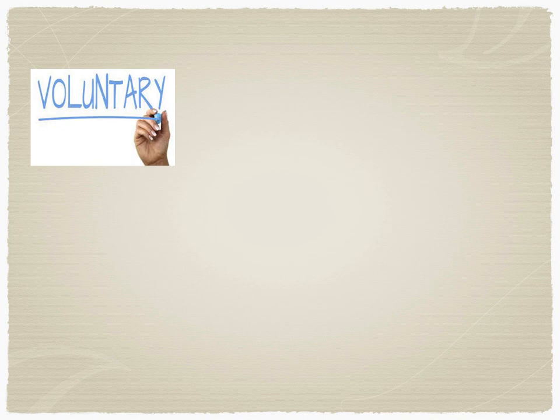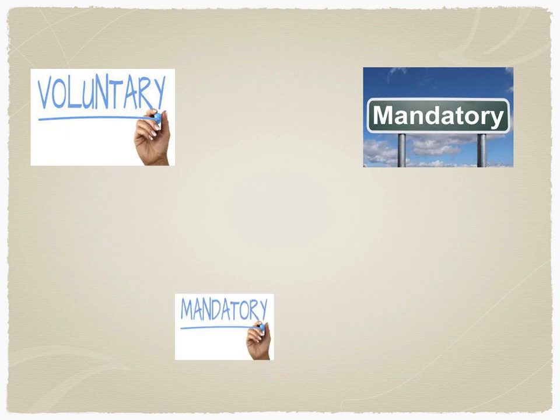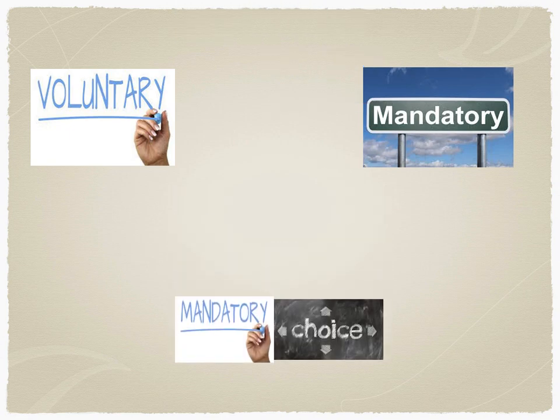As background, corporate actions can be of two categories: voluntary and mandatory. What causes confusion amongst some participants is the corporate action called mandatory with choice. A voluntary corporate action is when the investor decides whether they want to participate or not — like a rights issue. A mandatory corporate action is when it is mandated to investors and they have no choice but to accept it. But in mandatory with choice, there is a choice given to the investor as to the form in which they want to receive it.